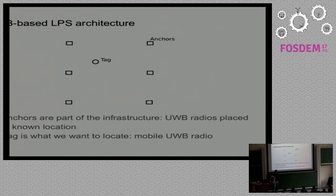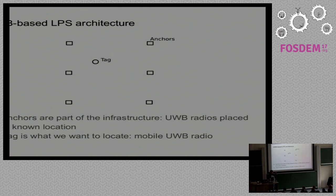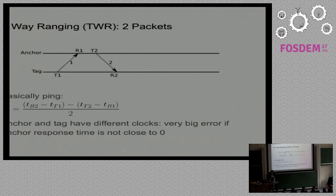Now that we have a radio capable of measuring timestamps, we need to use it to make a local positioning system. The common architecture uses anchors and tags. Anchors are fixed radios placed around the room with measured positions — we have a couple here with positions entered this morning. The tag is a radio that moves around and wants to know its position.